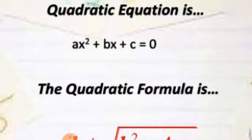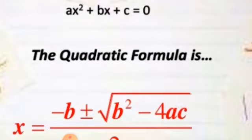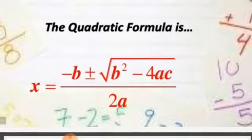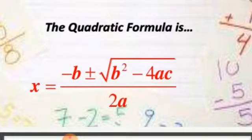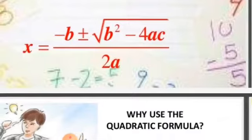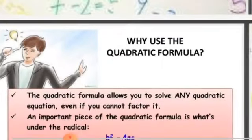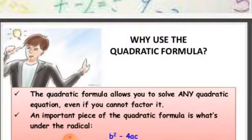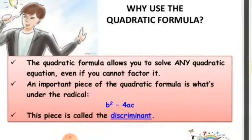This is the quadratic equation. We also have the quadratic formula: x equals minus b plus or minus the square root of b² minus 4ac, divided by 2a. We use this formula — the quadratic formula allows you to solve any quadratic equation even if you can't factor it.